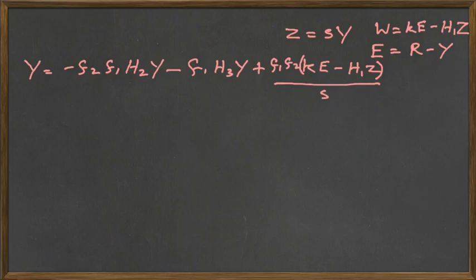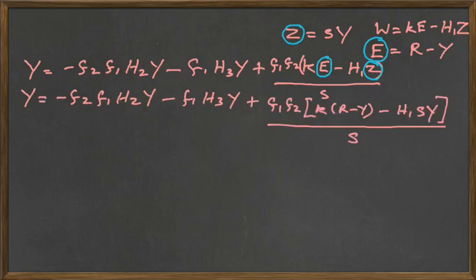If we can get rid of those E and Z there, then we will actually have R and Y in their place. Because Z is just sY and E is just R minus Y. So, by getting rid of our E and our Z, we will have exactly what we want. So, we're going to do that now. And there is the substitution. We've dropped in the sY in place of the Z and we've dropped in the R minus Y in place of the E.